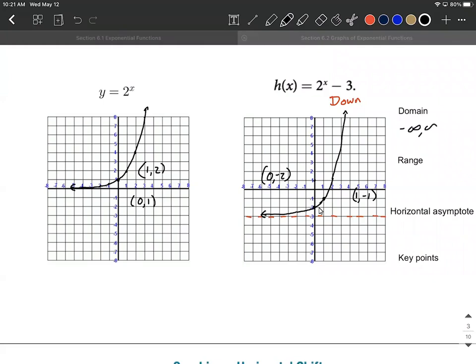Now, the domain is still negative to positive infinity. The horizontal asymptote moved down 3 units, so it's at y equals negative 3 now. Our graph is still above that, so we'd say from negative 3 to infinity, but don't include the negative 3. Leave that out. And our key points are indicated over here on the left-hand side, 0, negative 2, 1, negative 1.